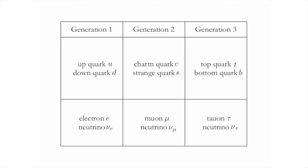The second generation has a set of particles whose properties are exactly the same as the first generation, but they have different masses. In this generation, there are two kinds of quark: the charm quark and the strange quark. There's also a particle with the same properties as the electron, just heavier — we call it the muon. In addition, there's another neutrino called the muon neutrino. The third generation consists of the heaviest set of particles. The quarks are called the top quark T and the bottom quark B. Meanwhile, there's yet another heavy copy of the electron called the tauon, and another neutrino, the tau neutrino.